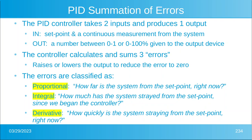The PID controller takes two inputs and produces one output. What are those two inputs? Well, it takes a set point — so let's say I want my fish tank to be at 76 degrees Fahrenheit — and it takes a continuous or semi-continuous measurement from the system. Essentially whenever the system needs a measurement, the measurement will be there for it. Then it has an output, and the output is going to be a number between zero and a hundred percent. That's going to be given to the output device, so instead of just turning the heater on and off, we're going to turn it at some particular percentage, maybe 32 percent.